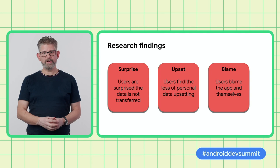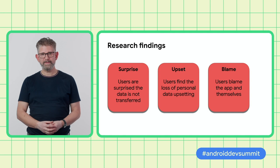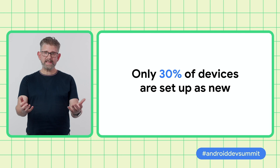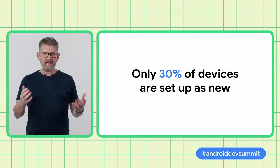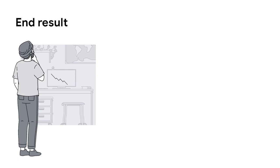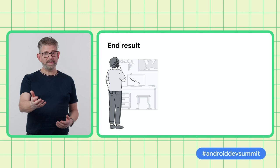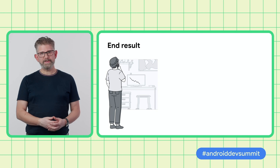Here's a summary of our research findings. Users are surprised that the app doesn't pick up where it left off on the old phone. They're upset at the loss of their personal data, and they don't blame Android or the OEM — they blame the app, or they blame themselves. In the setup experience, only 30% of devices are set up as new. The vast majority of users want their data to be coming across from their old phone. When that doesn't happen, it upsets users, which leads to lower ratings in the Play Store and to a direct loss of users. Don't be like this developer wondering where his users are going. You fight hard to get those users in the first place — make sure you keep them when they get a new device.